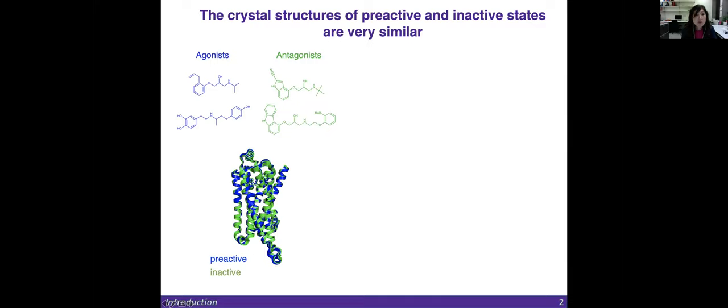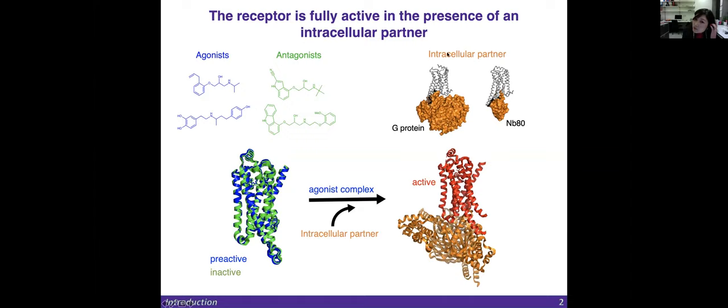Agonists bind to the receptor and freeze the receptor in a pre-active state, which may lead to a biological response. Whereas antagonists, such as the beta blockers, they compete for the same binding pocket but block the receptor in an inactive state. And although there are many crystal structures and cryo-EM structures, when we compare those structures for the same receptor, we can appreciate how similar they are.